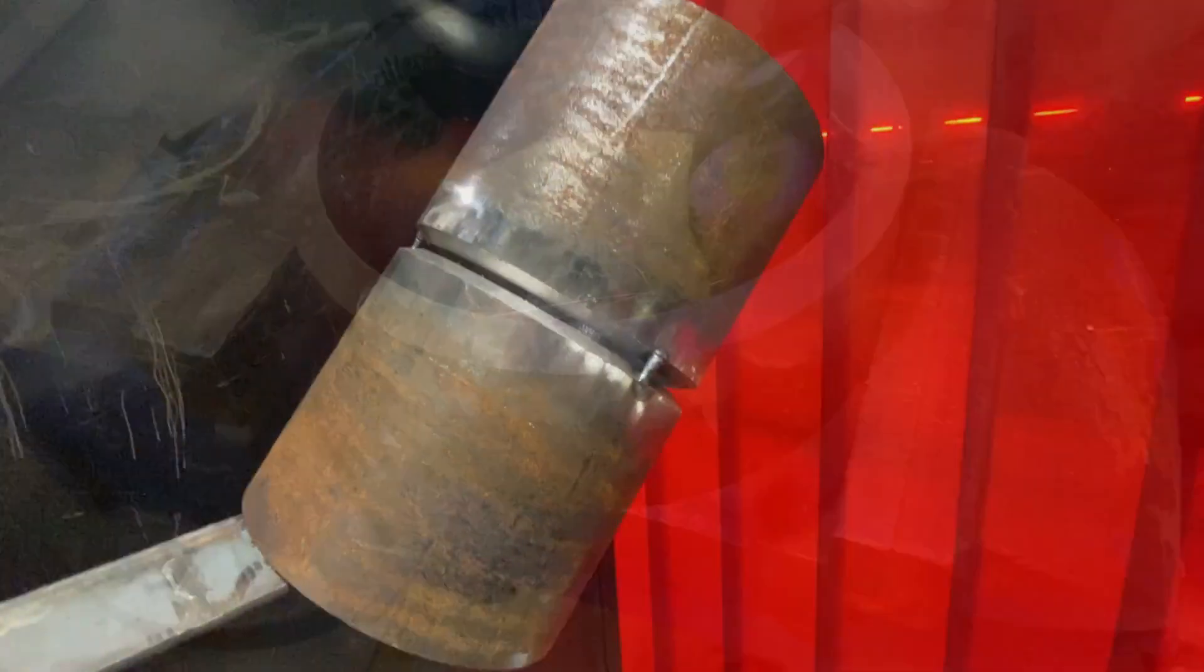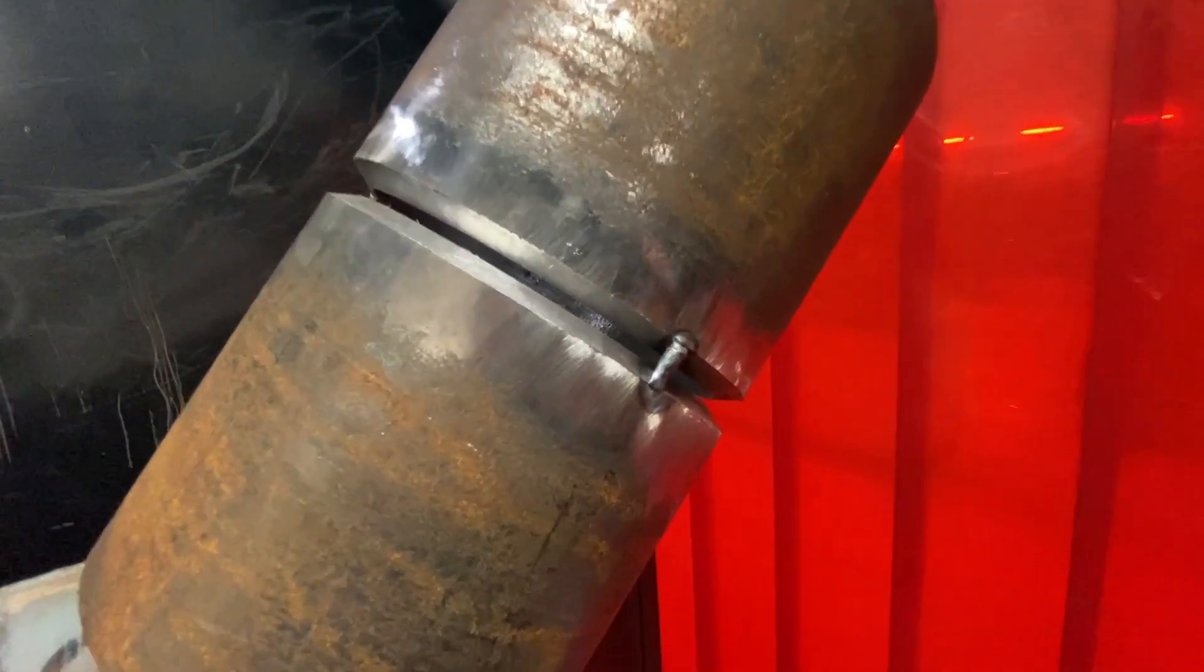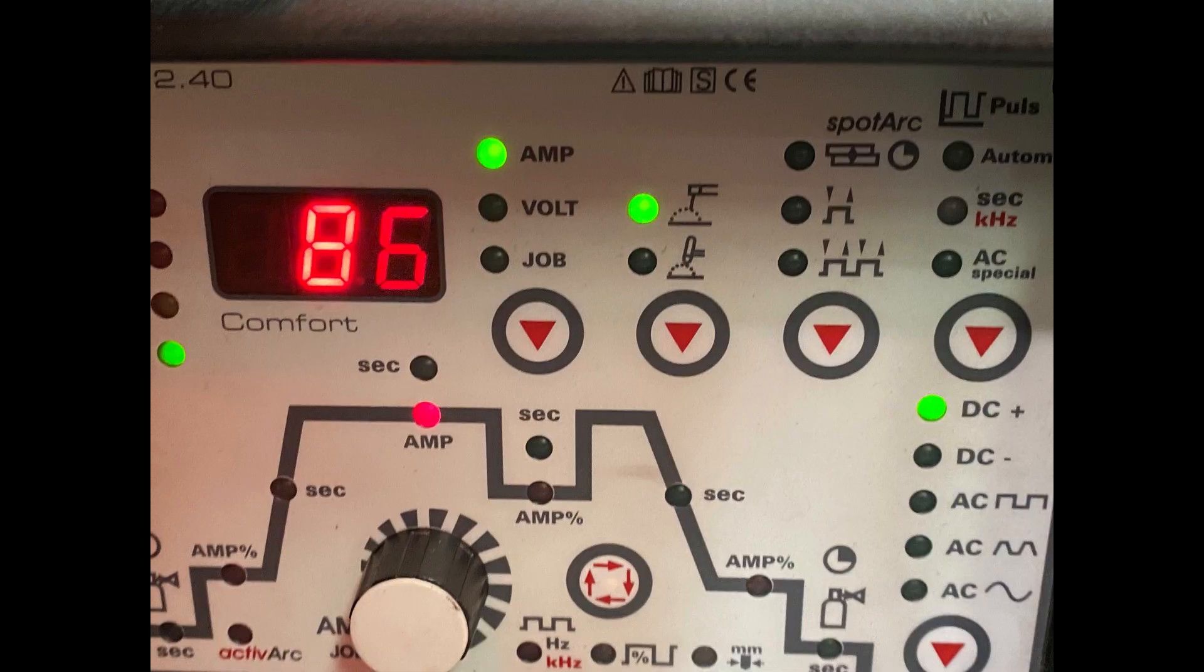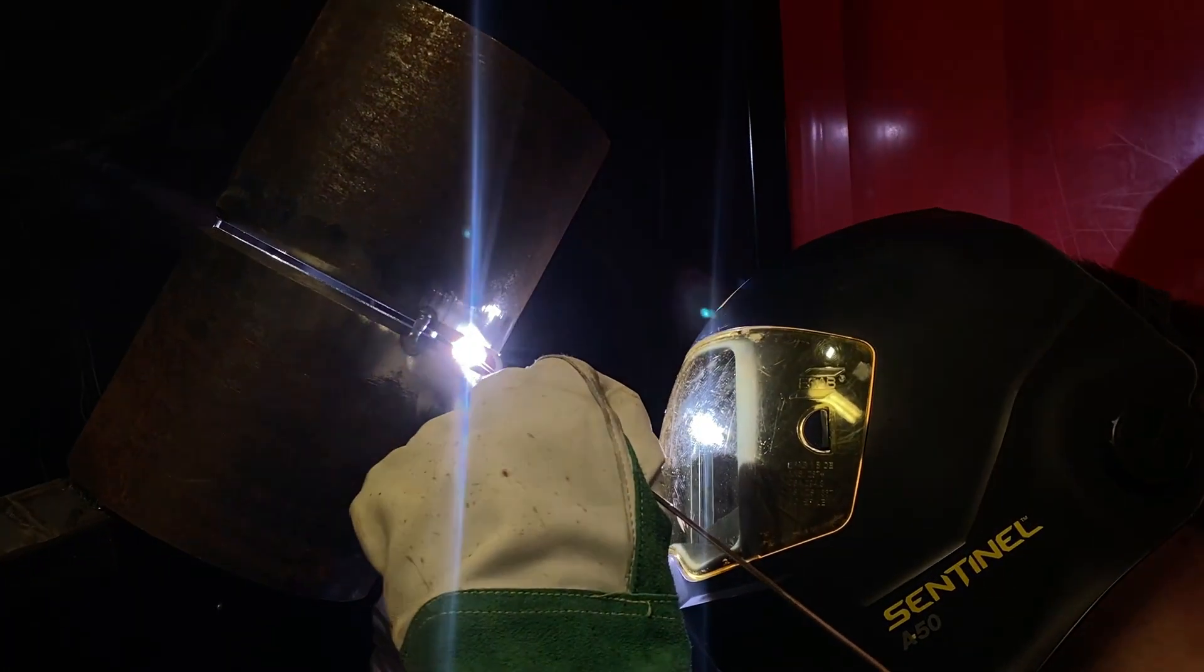Today we're going to be completing the industry standard 6G TIG and stick welding test. This is the test that all pipe welders have to undertake if you get to a really high standard of welding. The reason this test is used so extensively is because it's fixed at 45 degrees and you've got to weld in every single position which 6G covers.